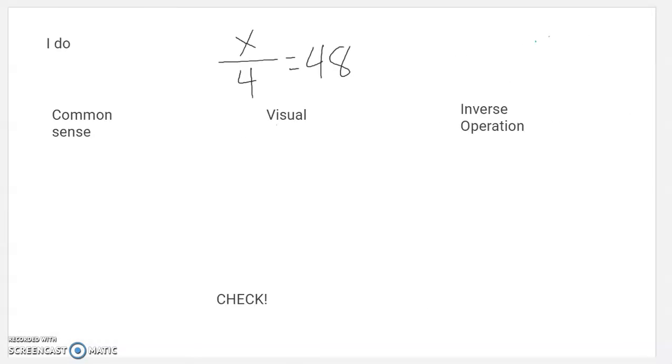So what if I say X divided by 4 equals 48? What is X? First of all, it looks kind of scary because it looks like a fraction. If you're not used to seeing division that way, that's the same thing as saying X divided by 4 equals 48. Those are the same. That's just two ways to write the same thing.